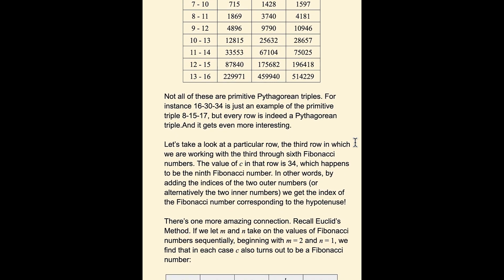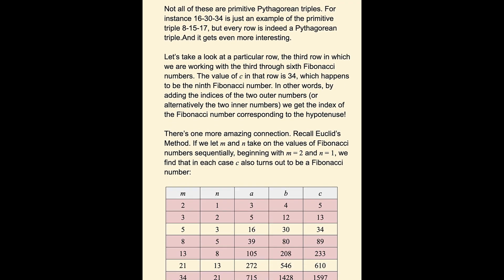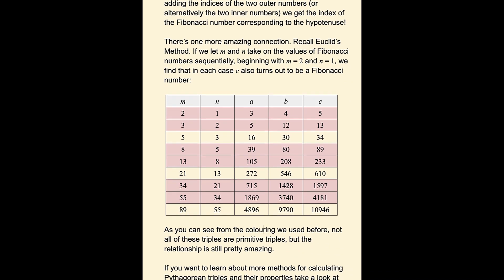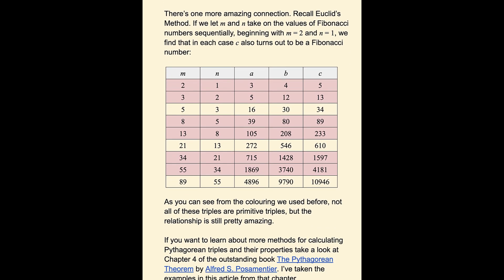There's one more amazing connection. Recall Euclid's method. If we let M and N take on the values of Fibonacci numbers sequentially, beginning with M equals 2 and N equals 1, we find that in each case,